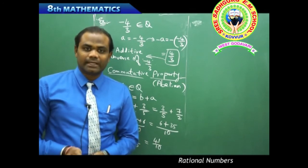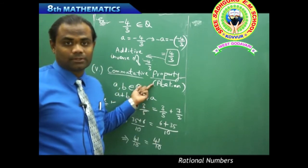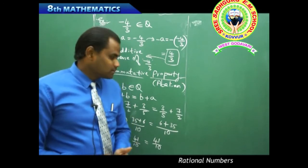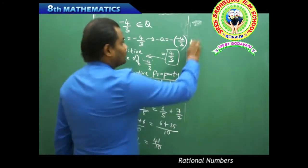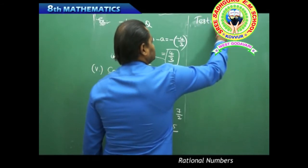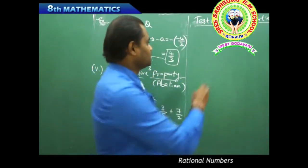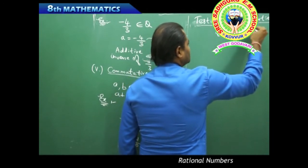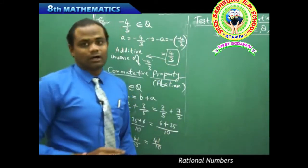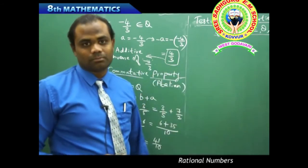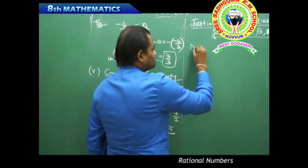So we have identified five properties of rational numbers under addition: closure, associative, existence of identity, existence of inverse, and commutative property. Using these five properties, we will now test whether they also hold for natural numbers, whole numbers, integers, and real numbers.